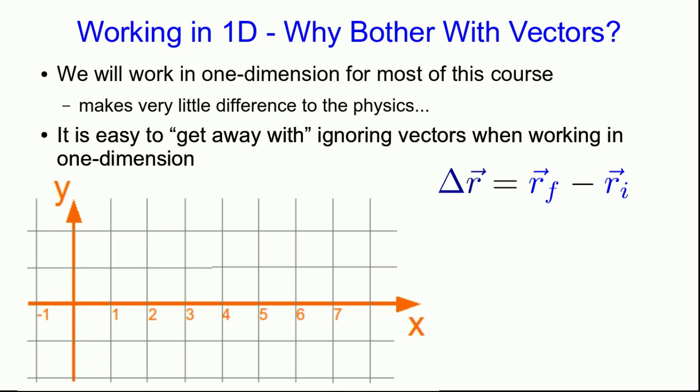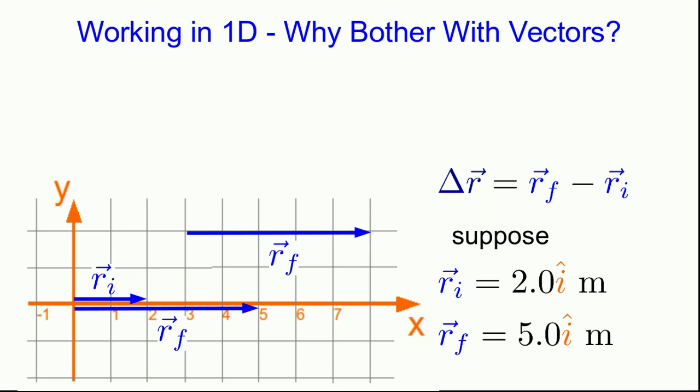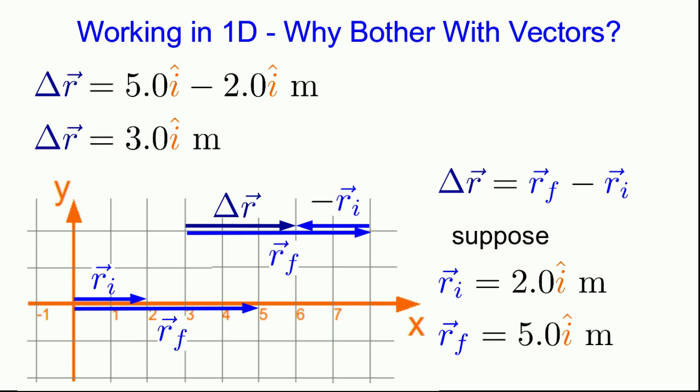As we'll see in the next unit a displacement is a subtraction of two position vectors. A final position minus an initial position. If that doesn't mean anything to you yet don't worry about it. All I'm doing is setting up a situation where I'm going to give you two vectors and show their subtraction. So let's suppose that the initial position is negative 2 i hat meters and the final position is 5 i hat meters. Here are the initial and final position vectors. I should probably draw them right on top of each other but that would be difficult to read so I've slightly offset them from each other. To subtract them let's take rf and we'll flip ri around and put it tail to tip with rf and then delta r the displacement is here. Working with the numbers I have delta r is just this and that gives 3 i hat meters.